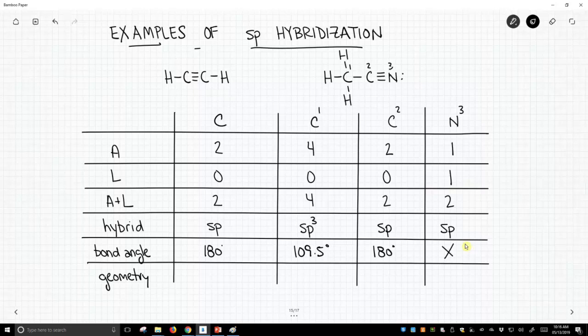Let's talk about geometries now. The geometry is determined by the bond angle and the number of attached atoms. So 180 degrees, two attached atoms. This is going to be a linear structure, and linear is actually the only geometry we encounter with sp hybridization.